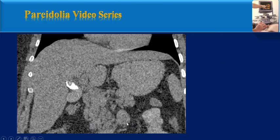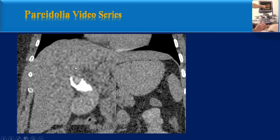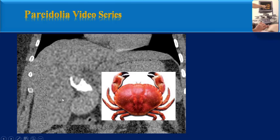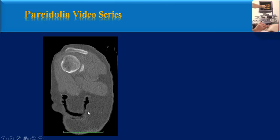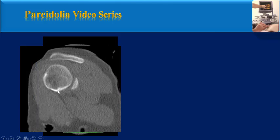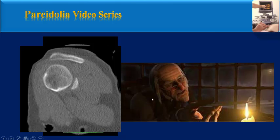This coronal CT image from the abdomen — please pay attention to this part of the image. There is a large stone in the gallbladder which looks like a trap. This sagittal image from the shoulder joint — please pay attention to this part of the image which looks like the face of Uncle Scrooge.